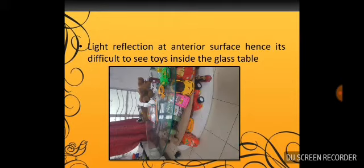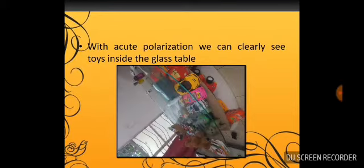Now, from a general photograph, see there is one photograph taken through window. There is a reflection of light at the anterior surface of the glass table and we are not seeing the toys beneath that very clearly. Another photograph is taken with the help of polarization at 45 degrees. The photograph is not very in alignment, but it is quite clear that the cars are very much visible and there is no light reflection.